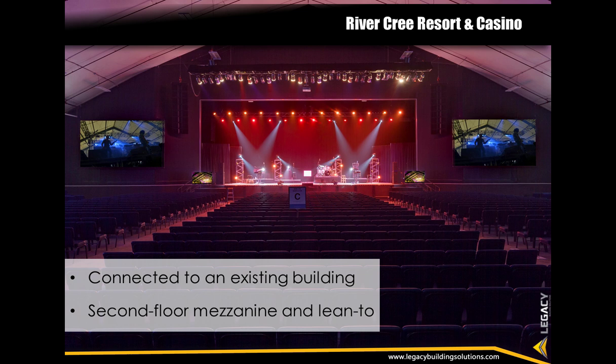The concert and event center for River Cree Resort and Casino in Alberta is connected to an existing structure via a sealed corridor. The interior features a white liner with a black fabric liner behind the stage. Legacy acted as construction manager, completing construction and overseeing subcontractors for finishing work. The second floor VIP area, stage, LED lighting system, and lean-to all added loads to the building, which was constructed to replace an under-engineered fabric structure. This building has been commended as especially airtight due to the flexible fabric seal around apertures, and the sound deadening properties of the fabric enhance the building's acoustics.